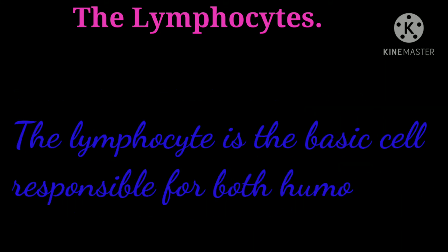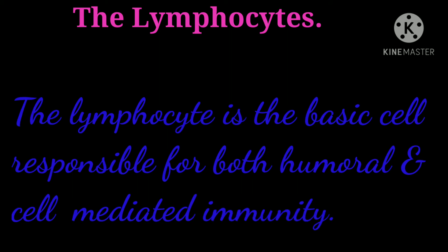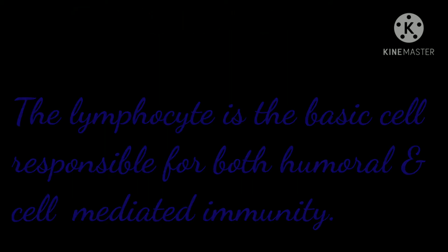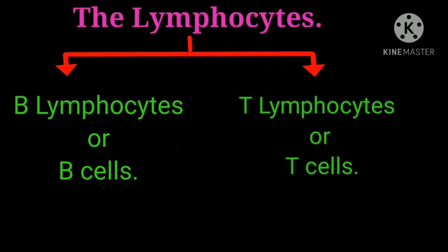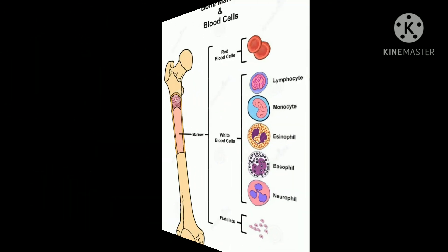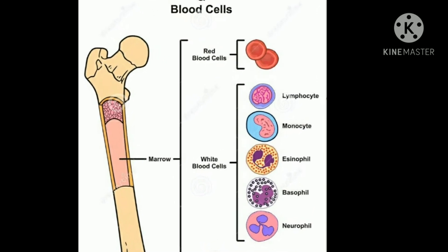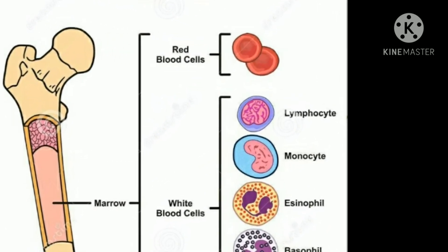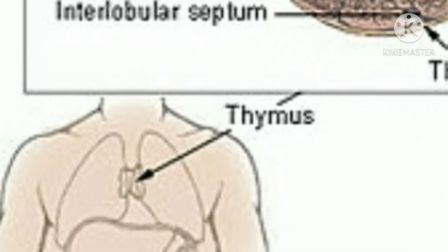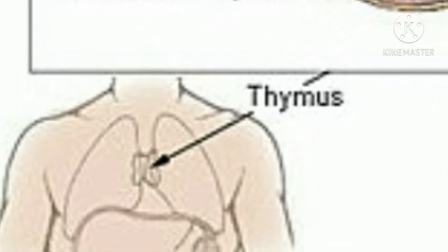The lymphocyte is the basic cell responsible for both humoral and cell-mediated immunity. The two primary types of lymphocytes are B lymphocytes or B cells, and T lymphocytes or T cells. Both originate from stem cells in the bone marrow. B cells also mature in the bone marrow, whereas T cells have to migrate from stem cells in the bone marrow to the thymus to mature.